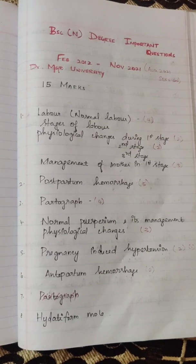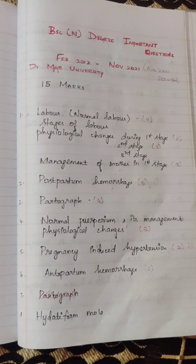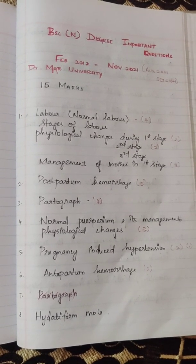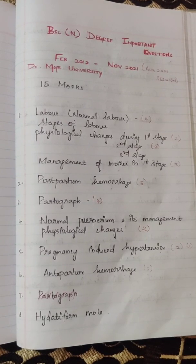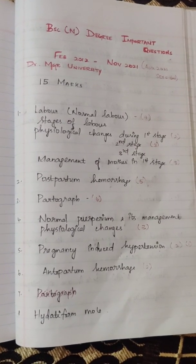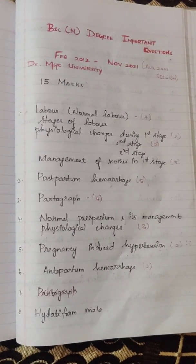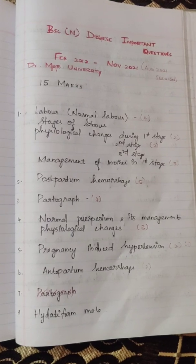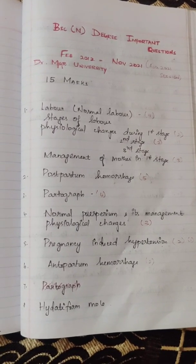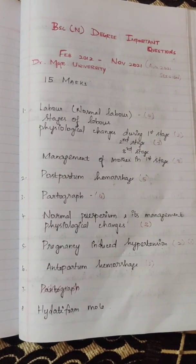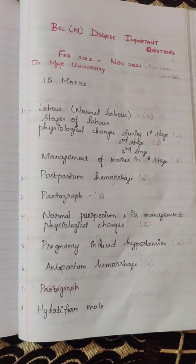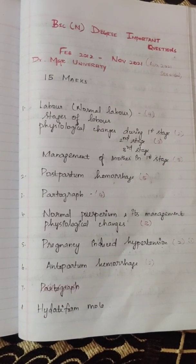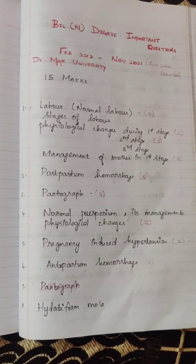Physiological changes during the first stage has appeared once; the second stage, 2 times; management, 3 times; and management of mother in the first stage, 3 times. This is one important question — moreover, it is 5 marks, and there are chances of 15 marks as well. So prepare it to cover both the 5-mark and 15-mark portions.